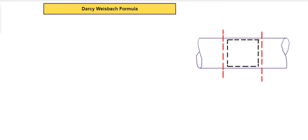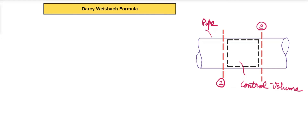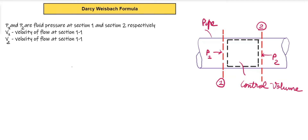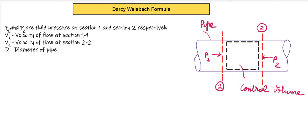We consider a horizontal pipe which has steady and turbulent flow. This pipe is horizontal and it is having steady and turbulent flow. In the center, this portion is the control volume and we have two sections — section 1-1 and section 2-2. The fluid pressure at section 1 is called P1, and P2 is the fluid pressure at section 2. V1 is the velocity of flow at section 1, and V2 is the velocity of flow at section 2. The diameter of this pipe is D.